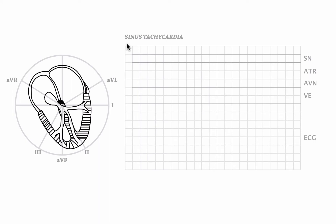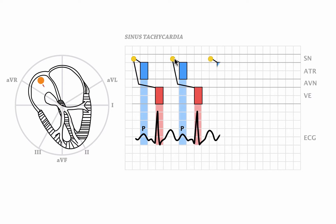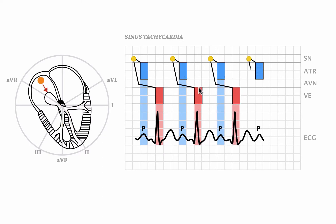Let me explain what happens in sinus tachycardia using this already familiar ladder diagram. In sinus tachycardia, the sinus node discharges at a rate of 100 beats or above per minute. The sinus node is located here. So it discharges, then the impulse travels down through the atria, causing a P wave, through the AV node, causing ventricular depolarization. Then the next impulse starts, travels through the atria, causes a P wave, travels down to the ventricles through the AV node, causes a QRS complex and ventricular depolarization, and so forth.